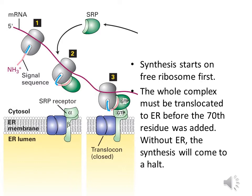In this figure, we can see the SRP receptor on the endoplasmic reticulum membrane, and the SRP which is bound to the signal peptide — the signal sequence in the polypeptide. The SRP binds to the SRP receptor at the endoplasmic reticulum before the 70th residue is added, so that the ribosome gets translocated near the endoplasmic reticulum.